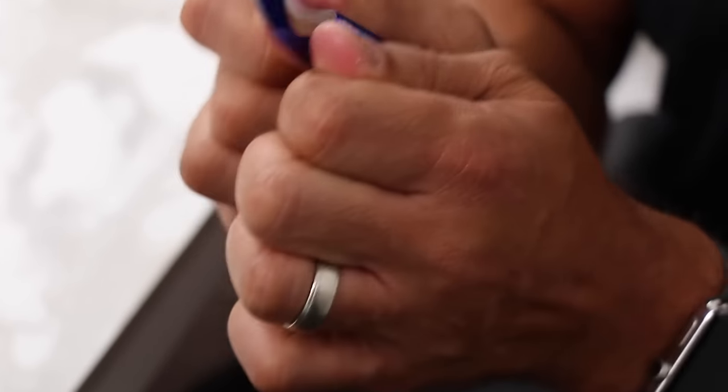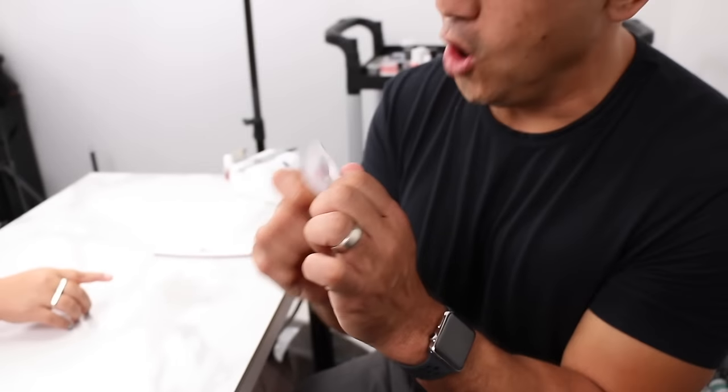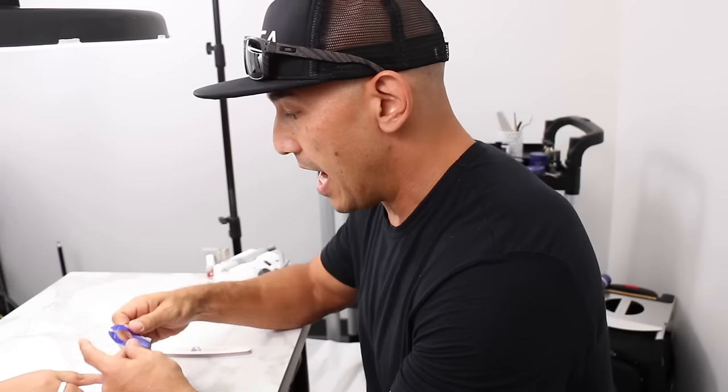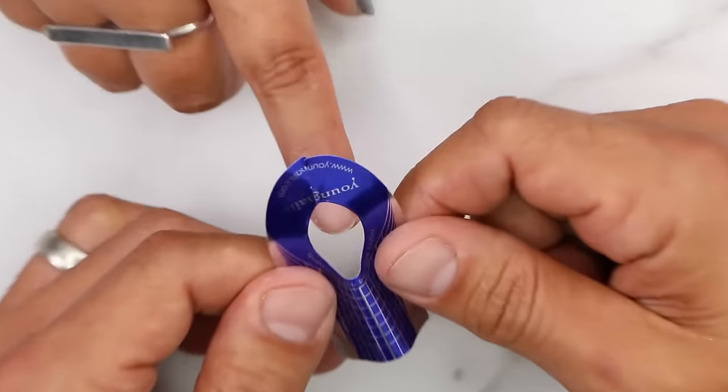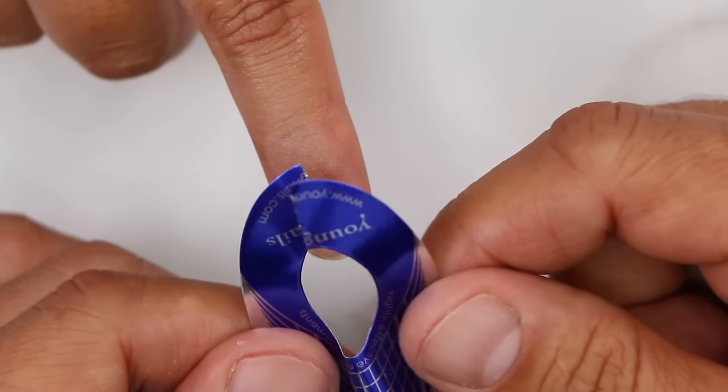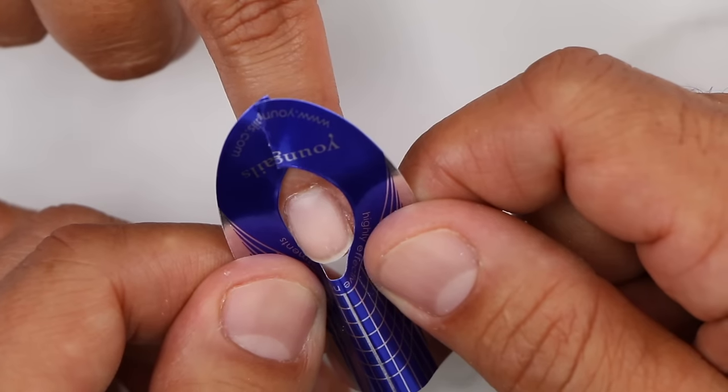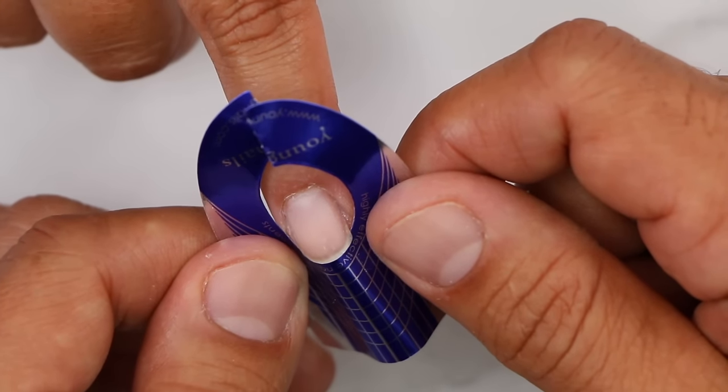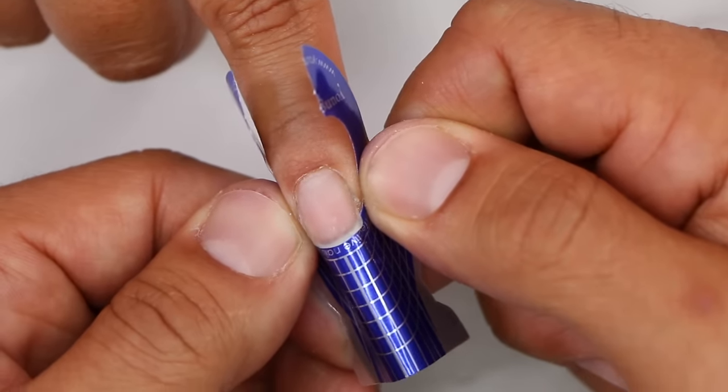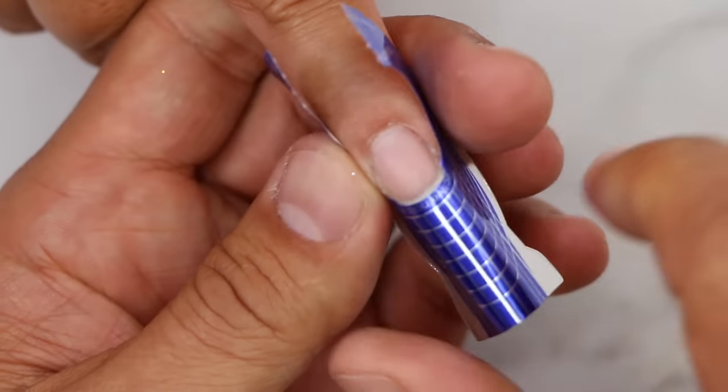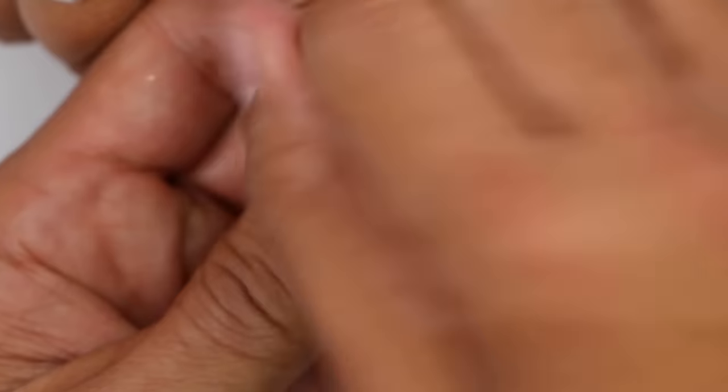I was taught to roll the form, roll the form, roll the form until you got this natural C curve. And then what I was taught to do was to actually, in the beginning, and again this is not the correct way. I was taught that you had to slide, slide, slide until it got underneath, just like this, and then secure not only this part, but this part up here.